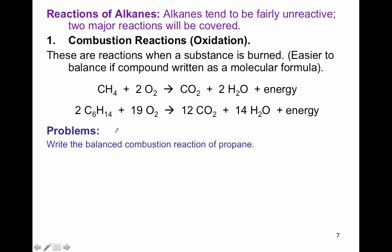How can these questions be asked on an exam? One way is in word form. Remember, combustion reactions only need to be written with molecular formulas. The first problem: write the balanced combustion reaction of propane. Propane has three carbons, so using the alkane formula CₙH₂ₙ₊₂, you get C₃H₈. With all combustion reactions, the organic compound reacts with oxygen to form carbon dioxide, water, and energy. Go ahead and write this yourself and then check your work.